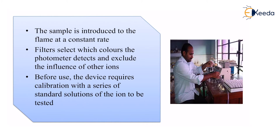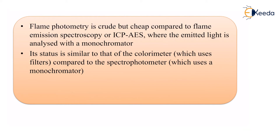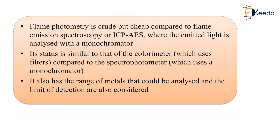Before use, the device requires calibration with a series of standard solutions of the ions to be tested. Flame photometry is crude but cheap compared to flame emission spectroscopy or ICP-AES, where the emitted light is analyzed with a monochromator. Its status is similar to that of a colorimeter, which uses filters, compared to a spectrophotometer, which uses a monochromator. It also has a range of metals that could be analyzed, and the limits of detection are also considered.